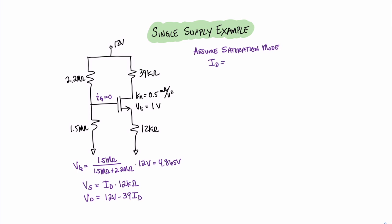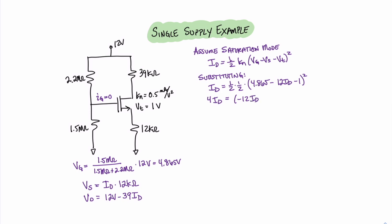Writing out the saturation mode equation, we have ID equals 1/2 KN times VG minus VS minus VT, quantity squared. Substituting, we find that ID equals 1/2 times 1.5 times 4.865 volts for VG, minus 12·ID for VS, minus 1 for the threshold voltage, quantity squared. Simplifying and moving the two 1/2 factors over, we get 4·ID equals quantity minus 12·ID plus 3.865, quantity squared. Expanding the square, 4·ID equals 144·ID² minus 92.756·ID plus 14.94. Moving the 4·ID to the right side, we get 0 equals 144·ID² minus 96.756·ID plus 14.94.